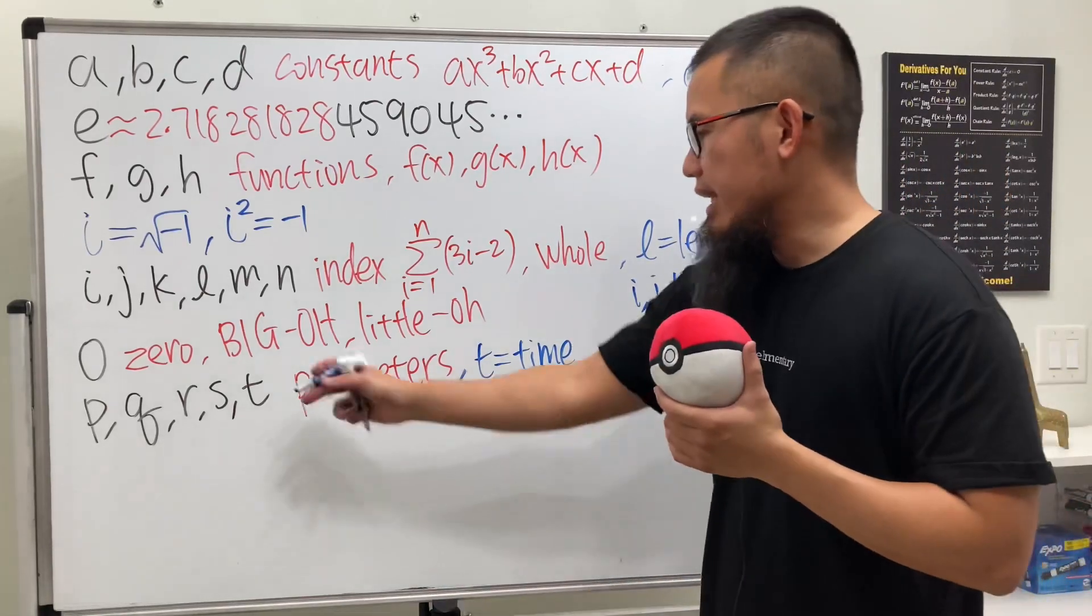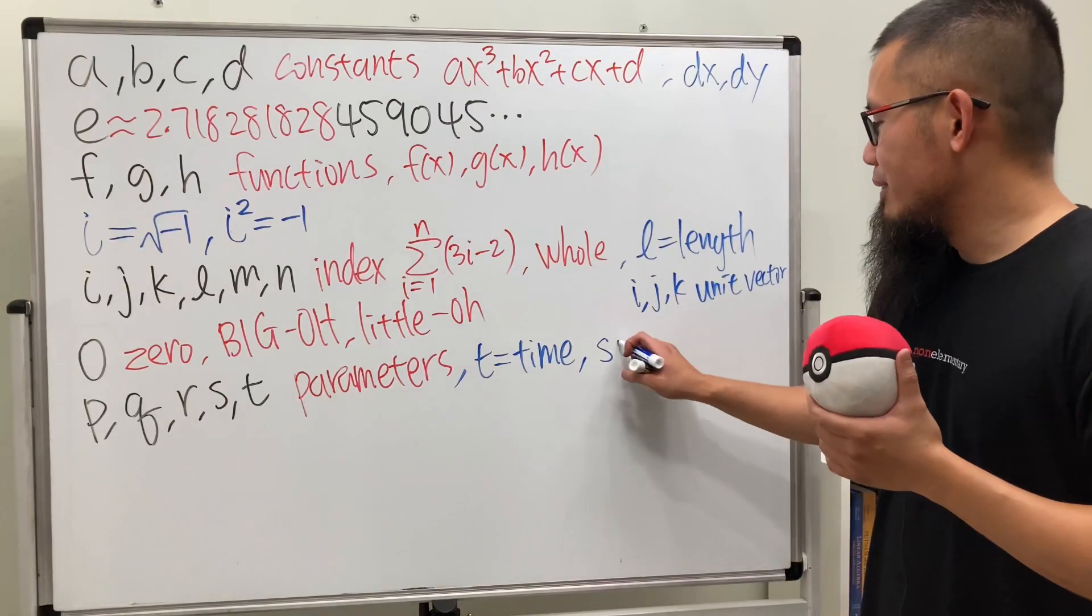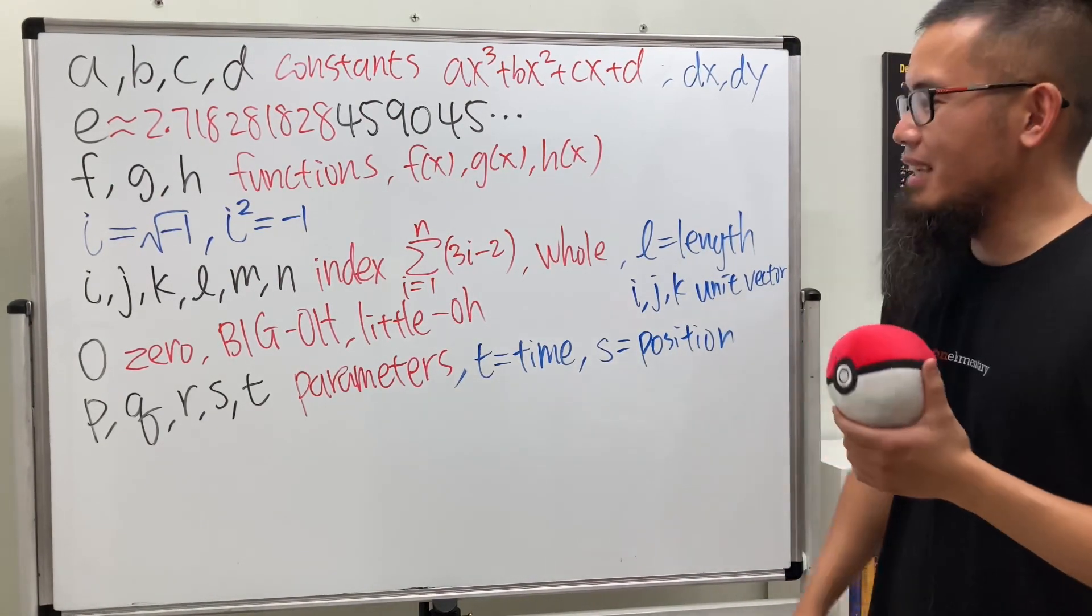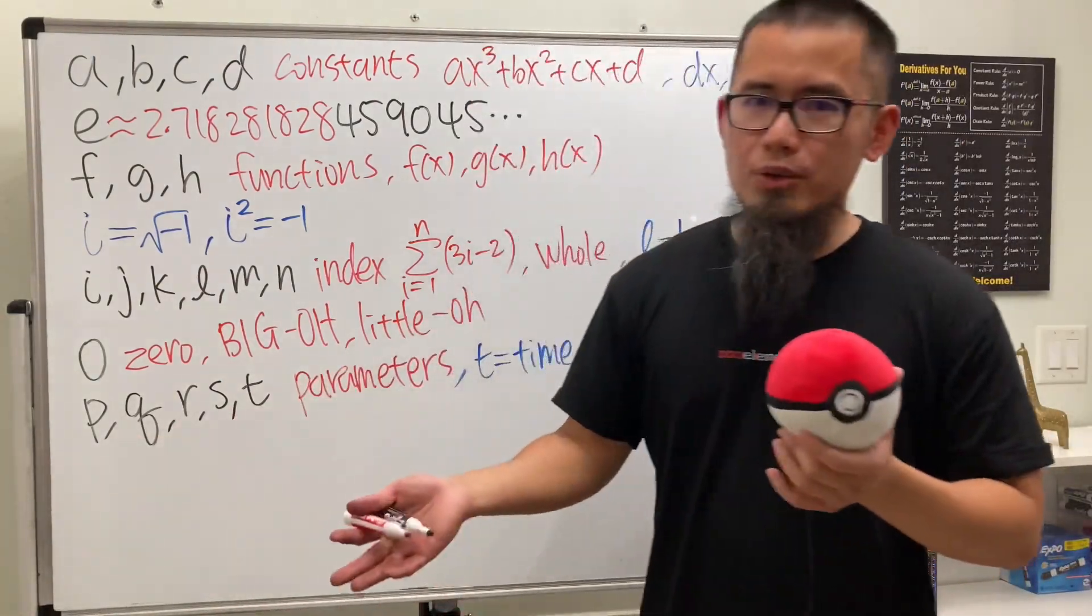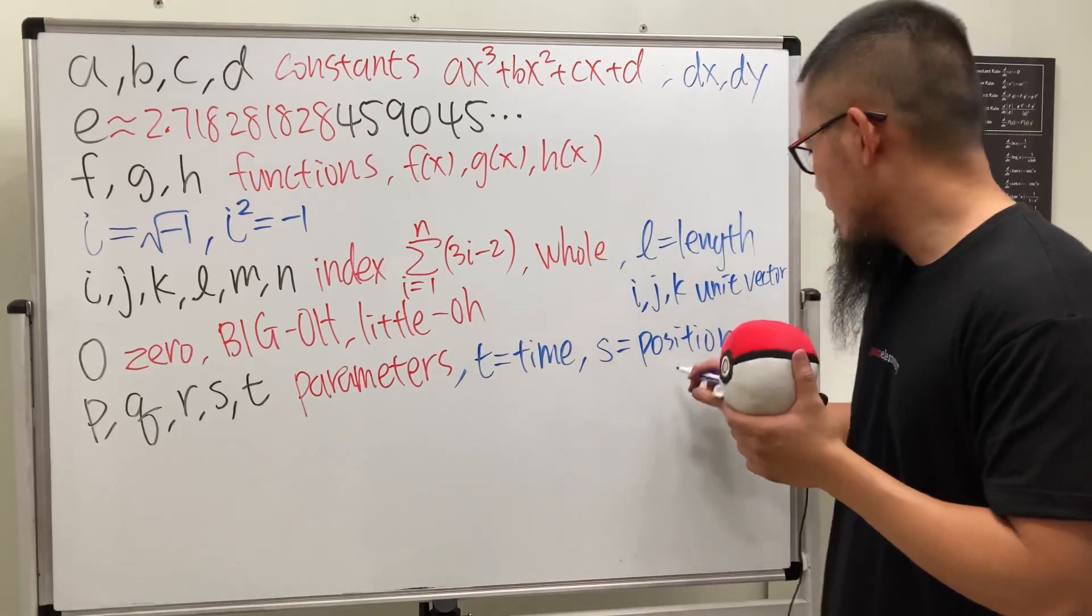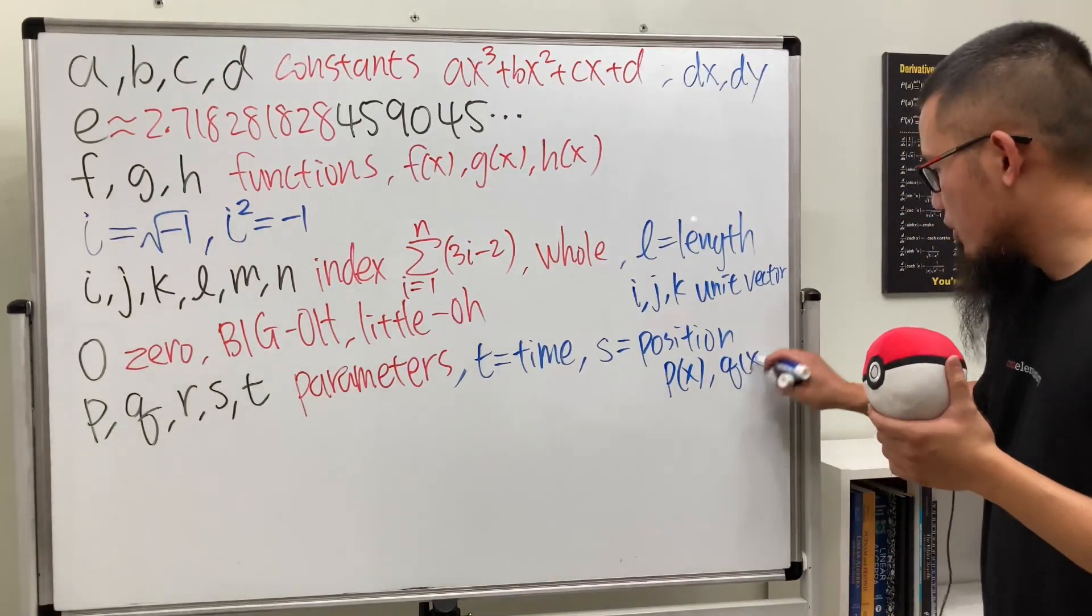Honorable mention: t is usually most likely for time, and s for position, especially in calculus s(t) and things like that. p and q can be for polynomials, like you can write p(x) or q(x) for polynomials.